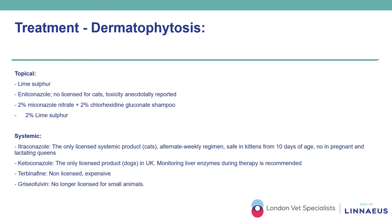The only product licensed for veterinary use in cats is itraconazole, available in a liquid formulation. The recommended regime is one week of therapy followed by one week off, repeated for three cycles, due to the capacity of the drug to be incorporated into skin and hair and slowly released, having a residual effect when discontinued. The product is safe to use in kittens from 10 days of age, but the manufacturer recommends avoiding it in pregnant or lactating queens. Ketoconazole is the only licensed product in the UK for treatment of dermatophytosis in dogs; monitoring liver enzymes during therapy is recommended. Other options include terbinafine; griseofulvin is no longer licensed for small animal treatment.